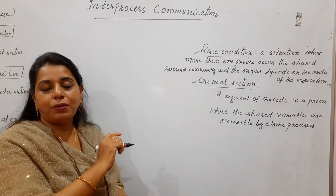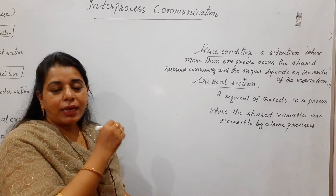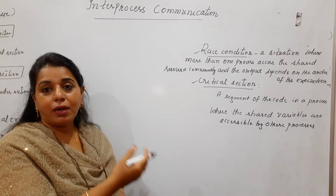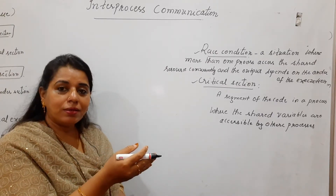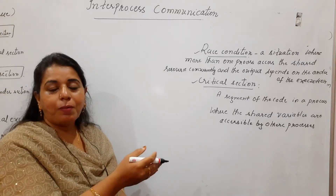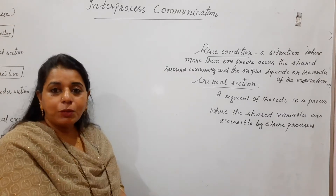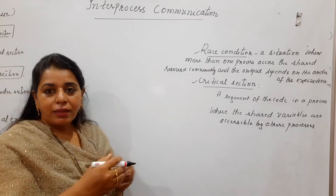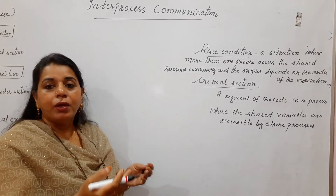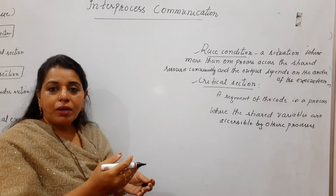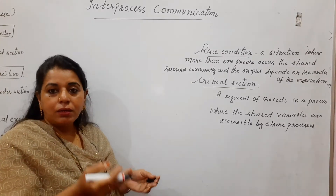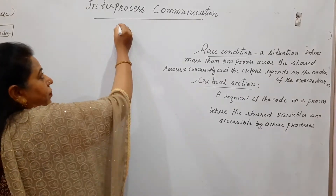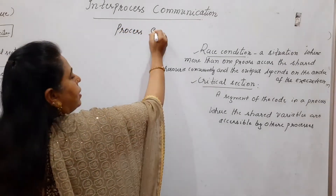To make you understand these two terms, I will first give you an example so you will come to know that this kind of problem may happen. The operating system takes care of this problem, and it is the most important one. A solution is a must so that the processes will give you the correct result. We are seeing that processes communicate with each other, and this communication should happen in a proper order. There should be some synchronization between processes to arrive at the correct value.